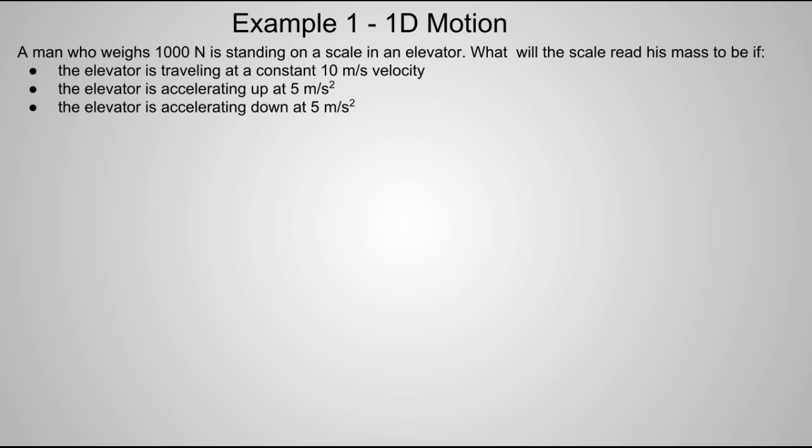So let's look at our problem. A man who weighs 1,000 newtons is standing on a scale in an elevator. What will the scale read his mass to be if: part A, the elevator is traveling at a constant velocity of 10 meters per second; if the elevator is accelerating upwards at 5 meters per second squared; or is it accelerating downwards at 5 meters per second squared?